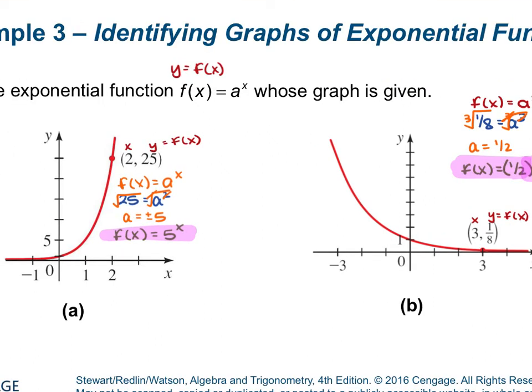When you look at these two graphs, you can tell whether you have a growth or a decay. If you're reading the graph from left to right and the line is going up, you have a growth — like example A. If you're looking at the graph from left to right and the line is going down, you have a decay — like example B.